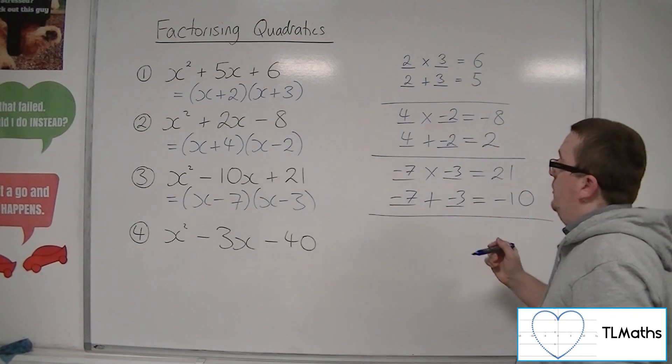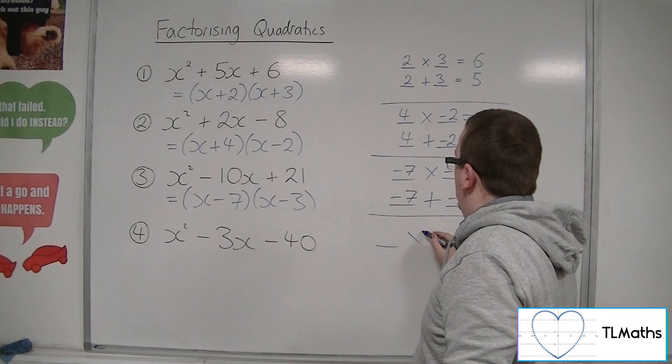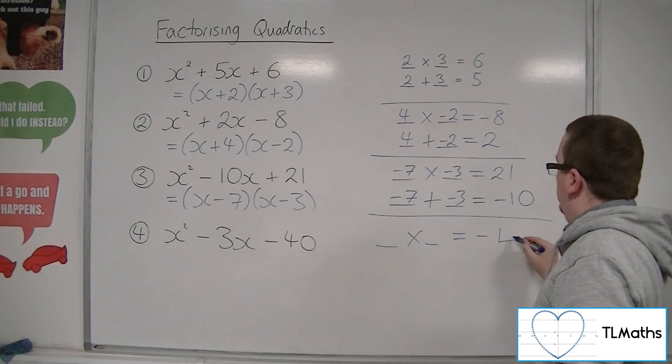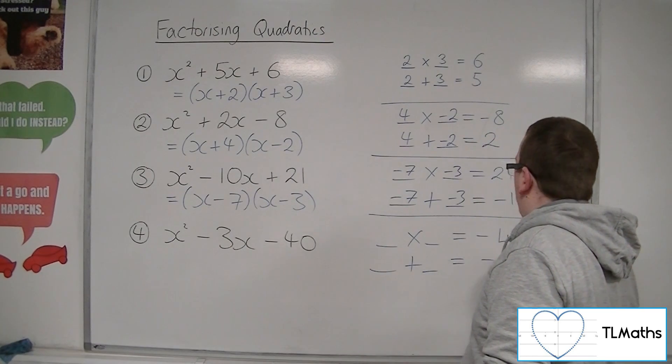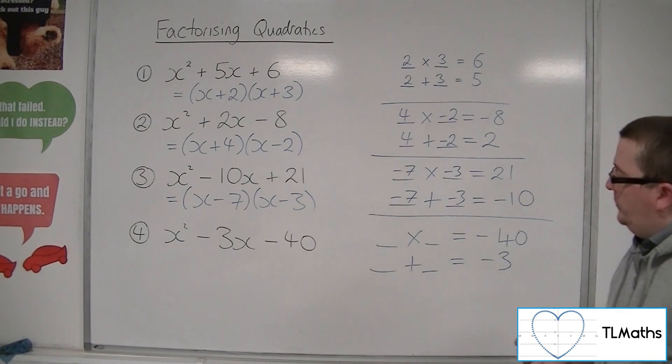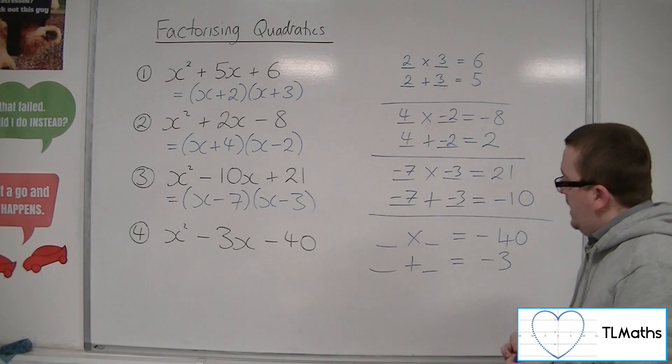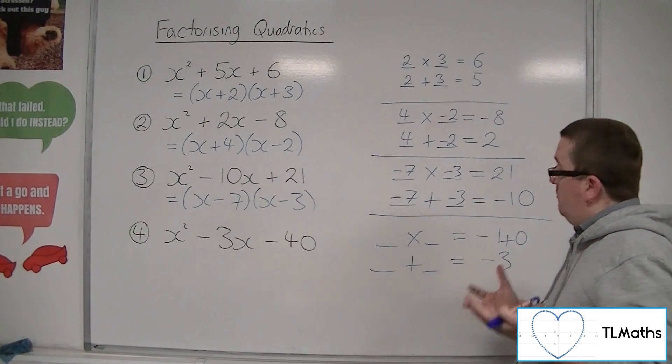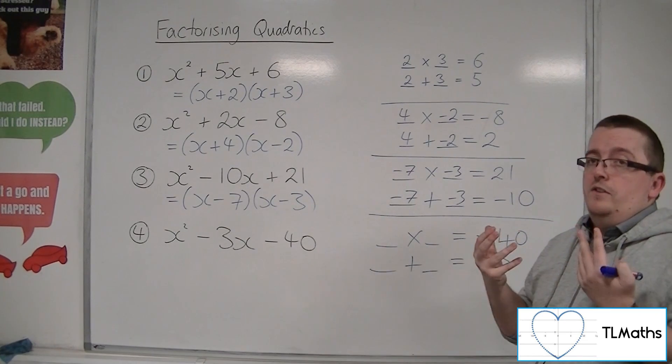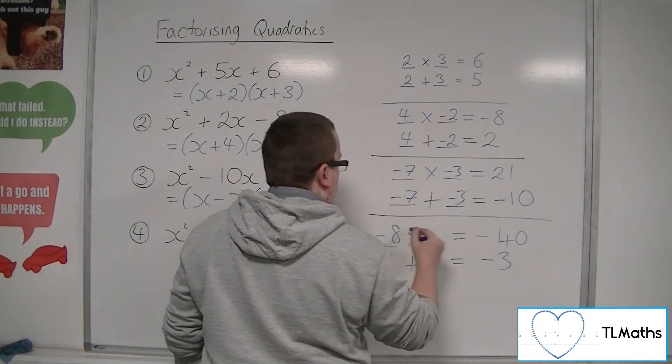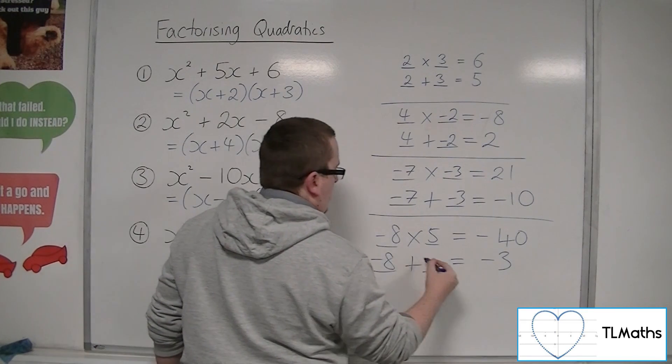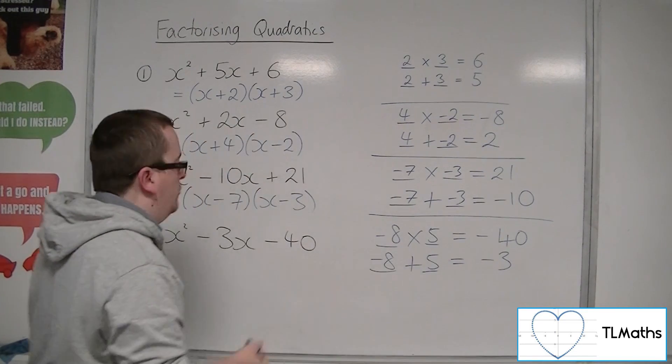And so for the last one, we've got two numbers that multiply together to make minus 40 but add together to make minus 3. So in this case, we would have minus 8 and plus 5. So minus 8 times 5 will get me the minus 40. Minus 8 plus 5 gets me the minus 3.